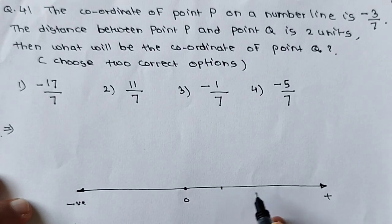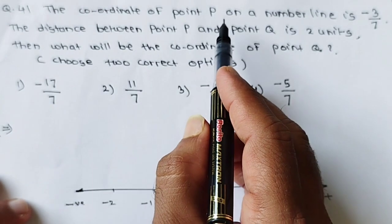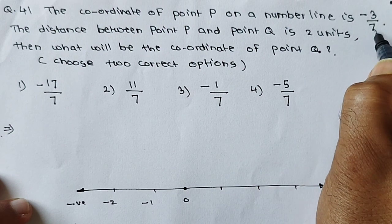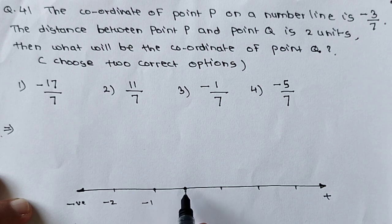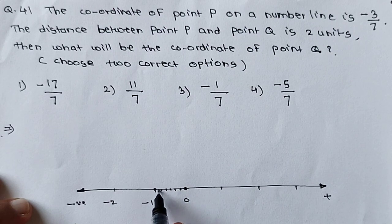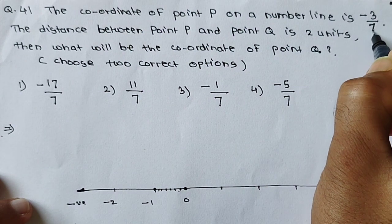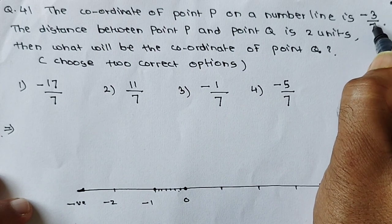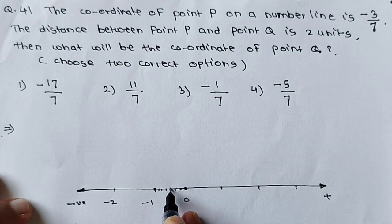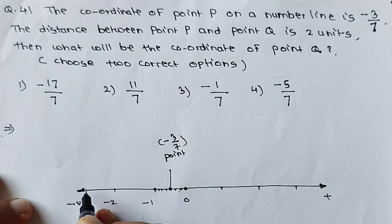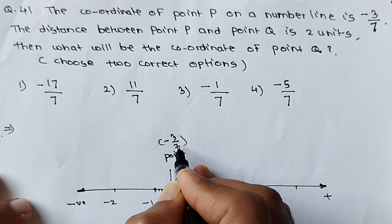If we consider this as 1 unit, 2 unit, 3 unit like this, and here in the negative direction minus 1, minus 2 like this. Point P coordinates are given, that is minus 3 upon 7 — meaning the point is lying on the left side from the origin. Minus 3 upon 7 means this 1 unit is divided into 7 parts. So just divide it into 7 parts: 1, 2, 3, 4, 5, 6, and 7. Each single unit is divided into 7 parts because 7 is given, and out of 7, we take 3 parts. This is point P, whose coordinate is minus 3 upon 7 — minus means on the left side of the origin, 3 parts out of 7 of the first unit.